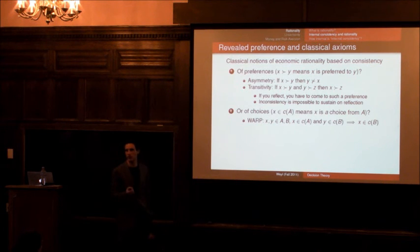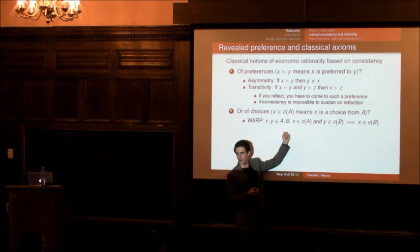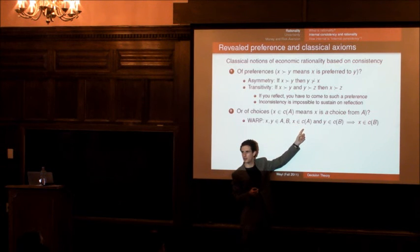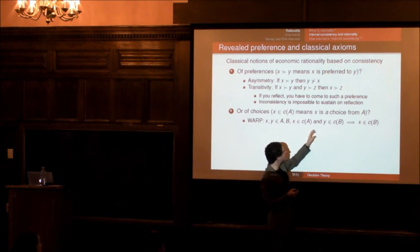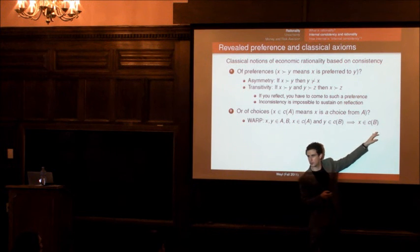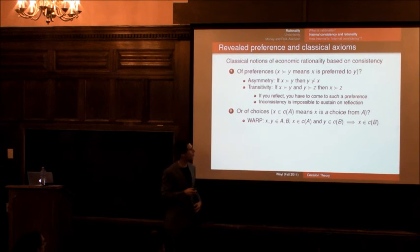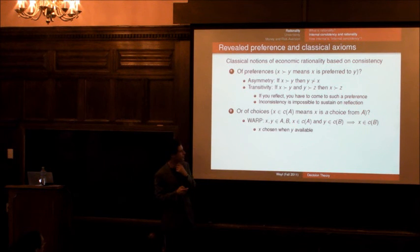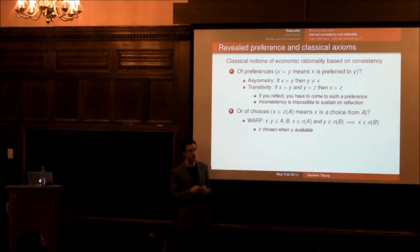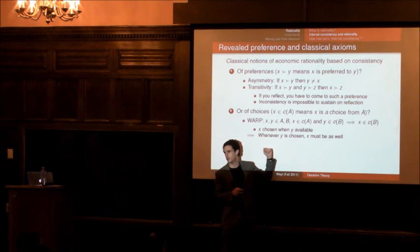So the weak axiom of revealed preference states that if x and y are both in the sets a and b, and you choose x from a, then any time y is chosen and x is available, which is assumed here, then x also has to be chosen. Right? Okay. That's the weak axiom of revealed preference. So if x is chosen when y, in a situation when y is available, then whenever y is chosen, x must be chosen as well. If x is available.